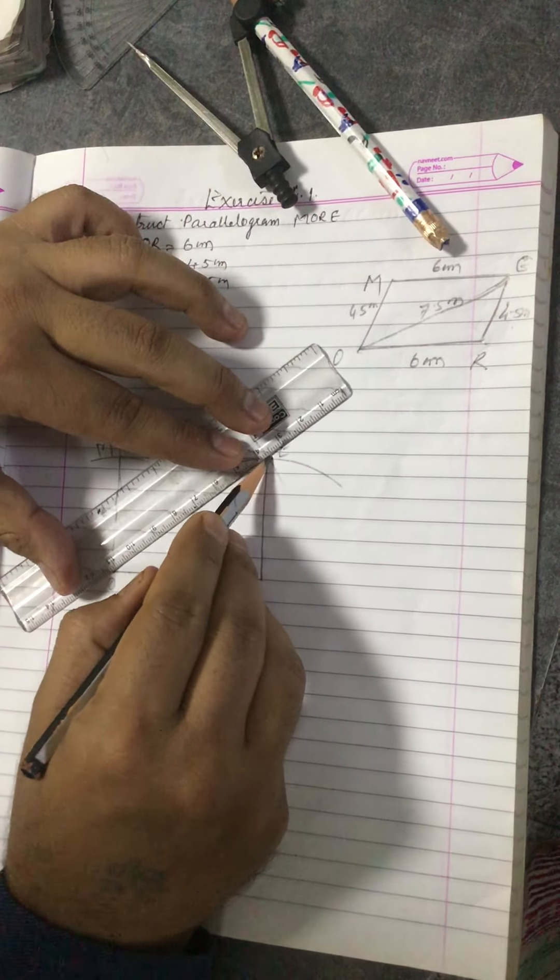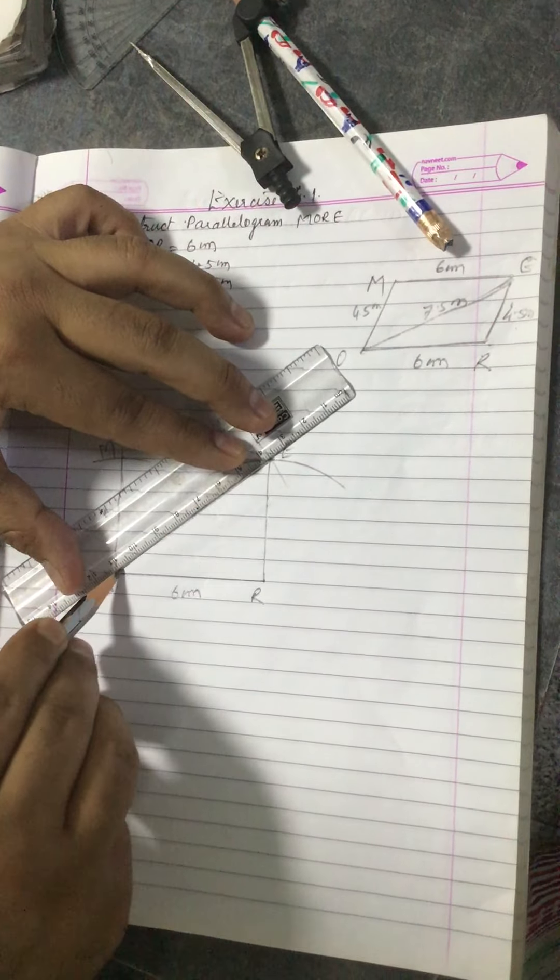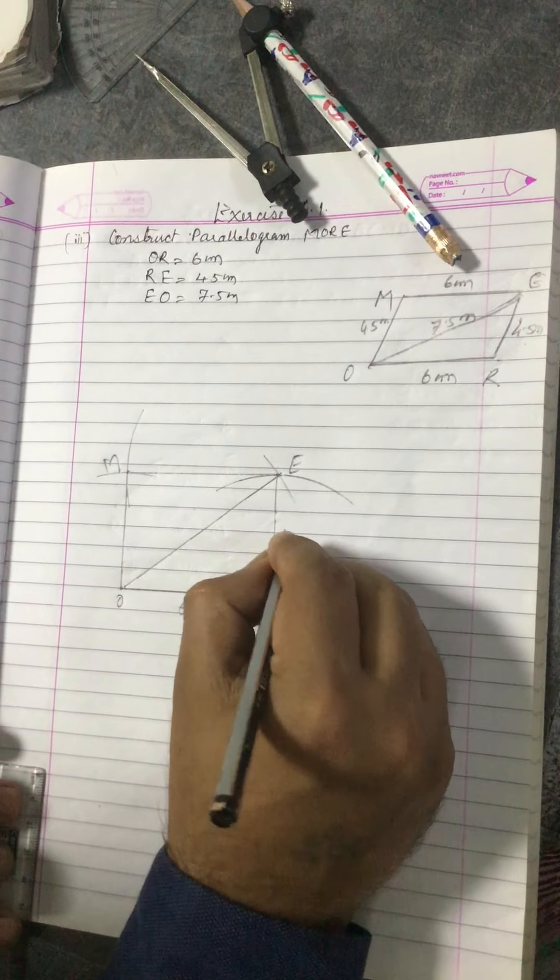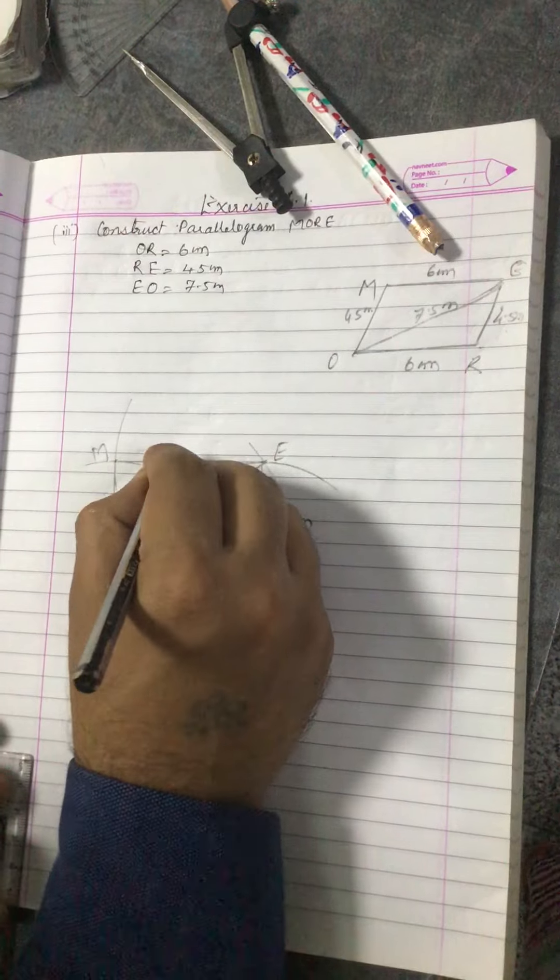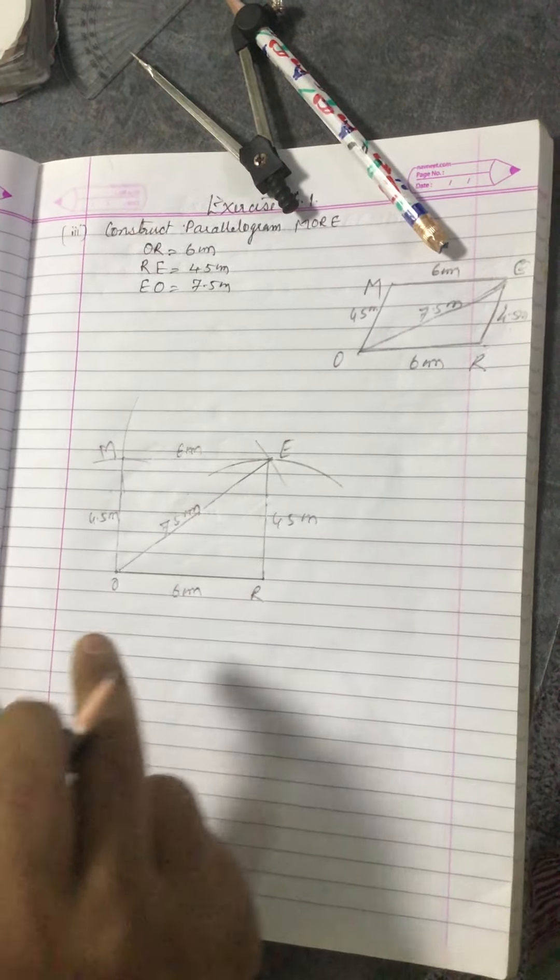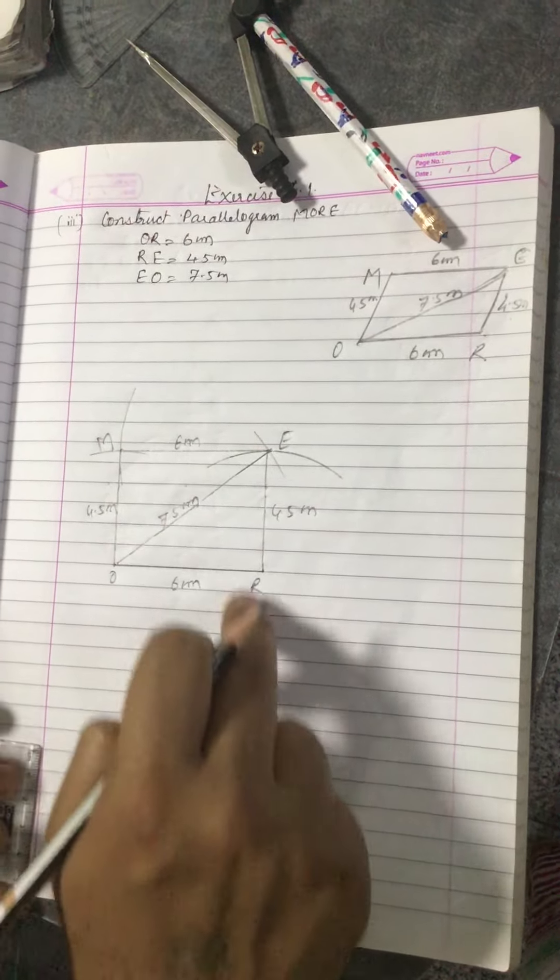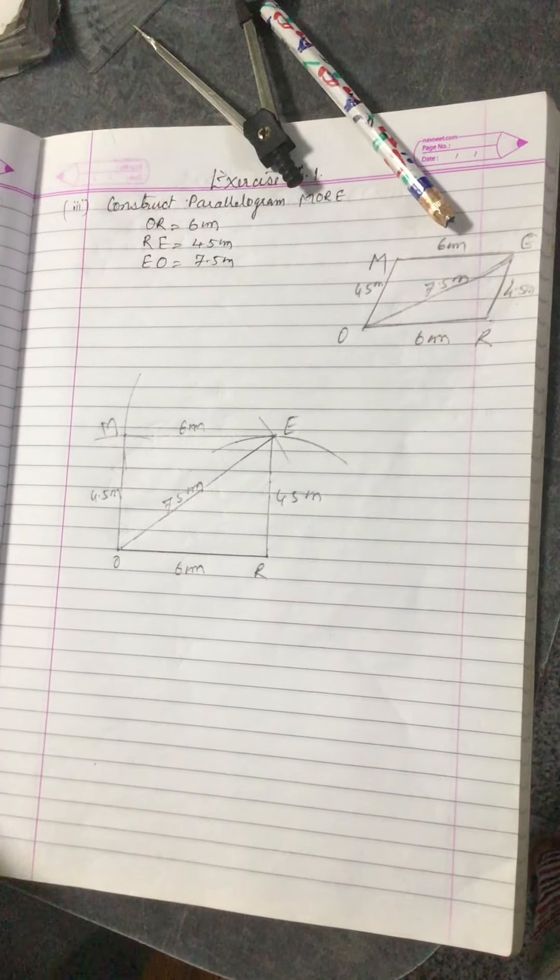Make diagonal also because it is given in the question. So it is 4.5 centimeter, 7.5 centimeter, 6 centimeter, 6 centimeter, 4.5 centimeter. MORE is the required parallelogram.